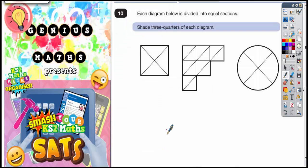Question 10. Each diagram below is divided into equal sections. Shade in 3 quarters of each diagram. The first thing I'm going to do is count how many actual sections there is in each diagram. So in the first diagram there are 4 sections.